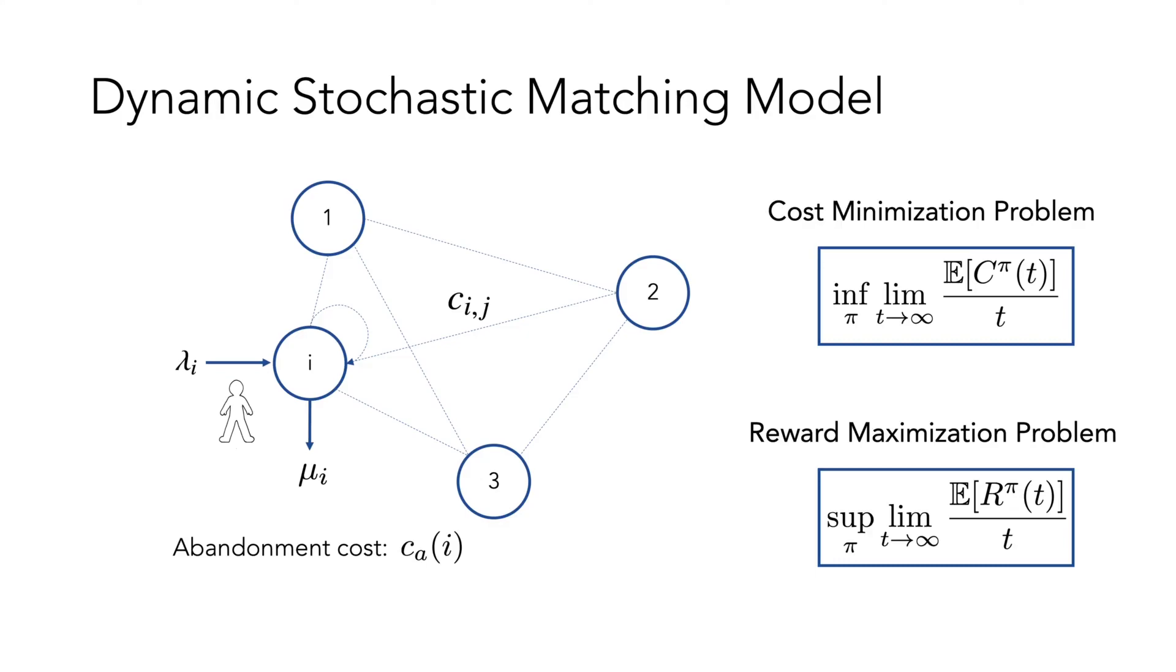We formulate this problem as a continuous time markup decision process. Agents queue in a network and they abandon if they're not matched on time.